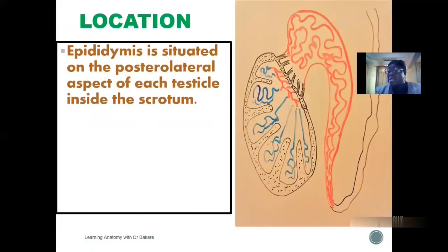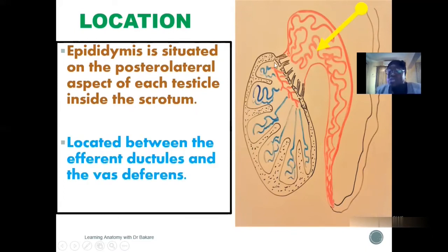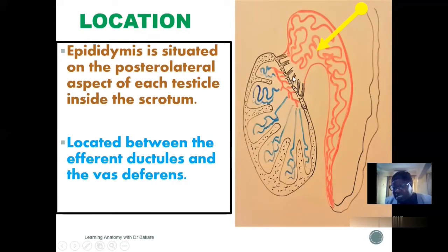The epididymis is specifically located at the posterolateral part of the testes. They are paired organs, so we have one on the posterolateral surface of each testis inside the scrotum. So the scrotum is a sac that houses both the testes and the epididymis. It is located between the efferent ductus and the vas deferens. The efferent ductus is a tubular collection that emerges from the testes, and from it the sperm is emptied into the epididymis. After passing through the epididymis, they are released into the vas deferens.